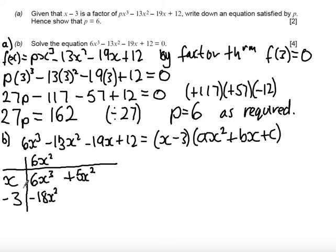In order to get this plus 5x squared, I need to do plus 5x multiplied by x. Again, fill in this bottom row, minus 3 times plus 5x gives me minus 15x.